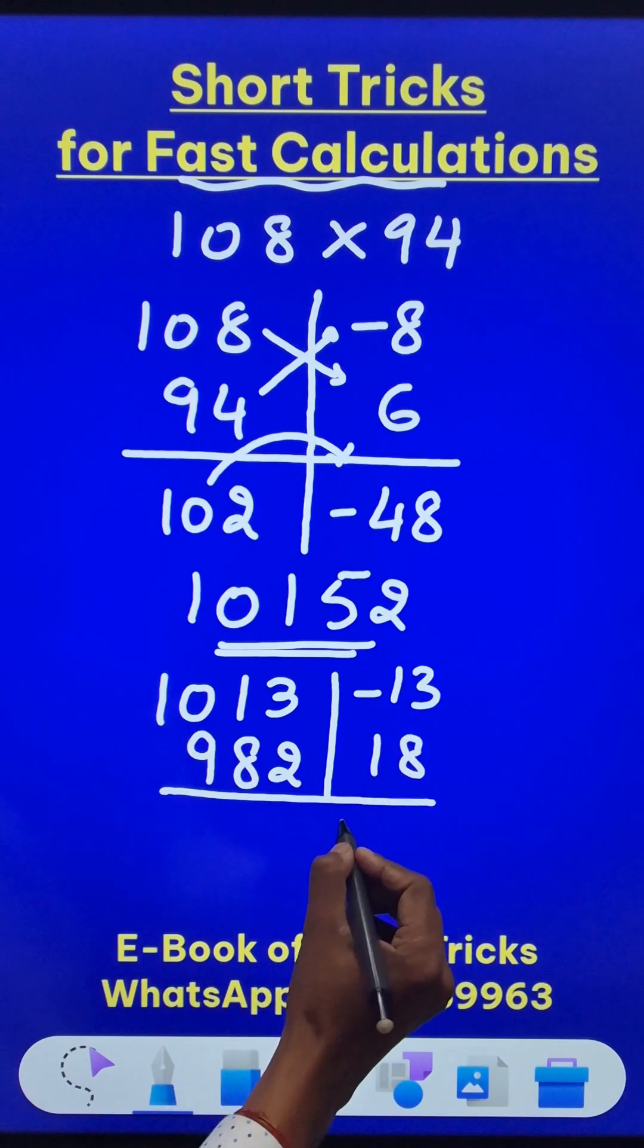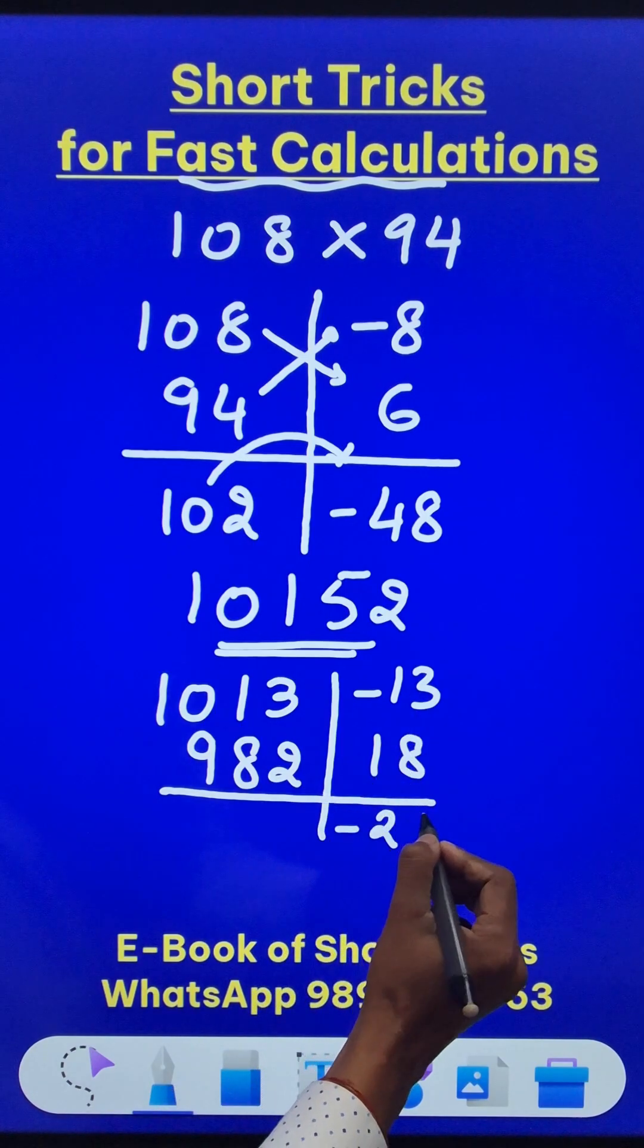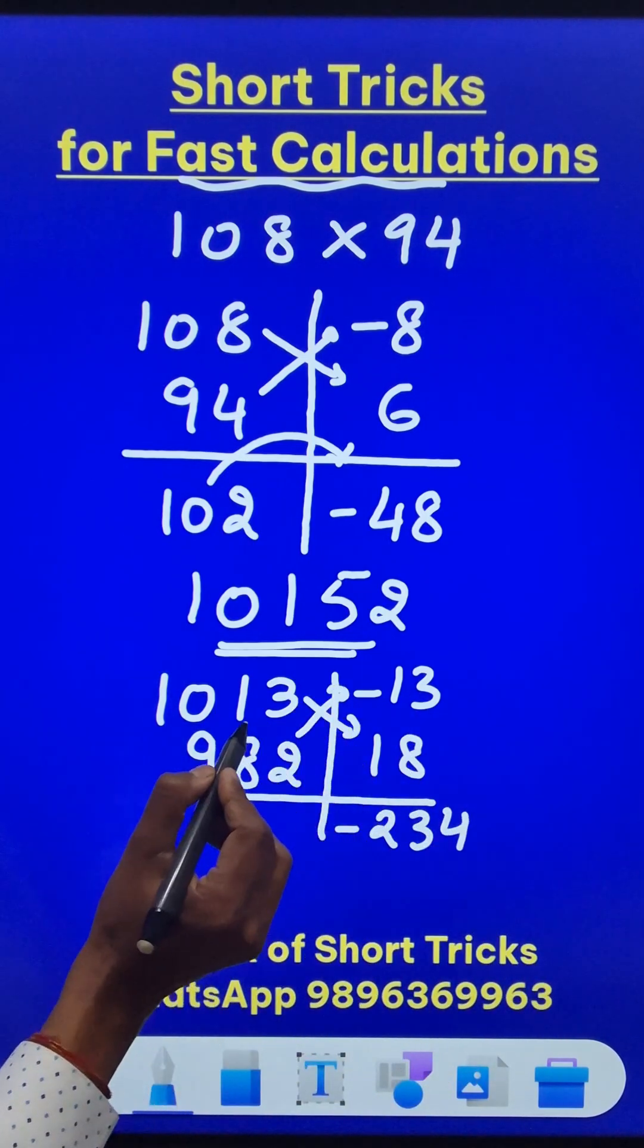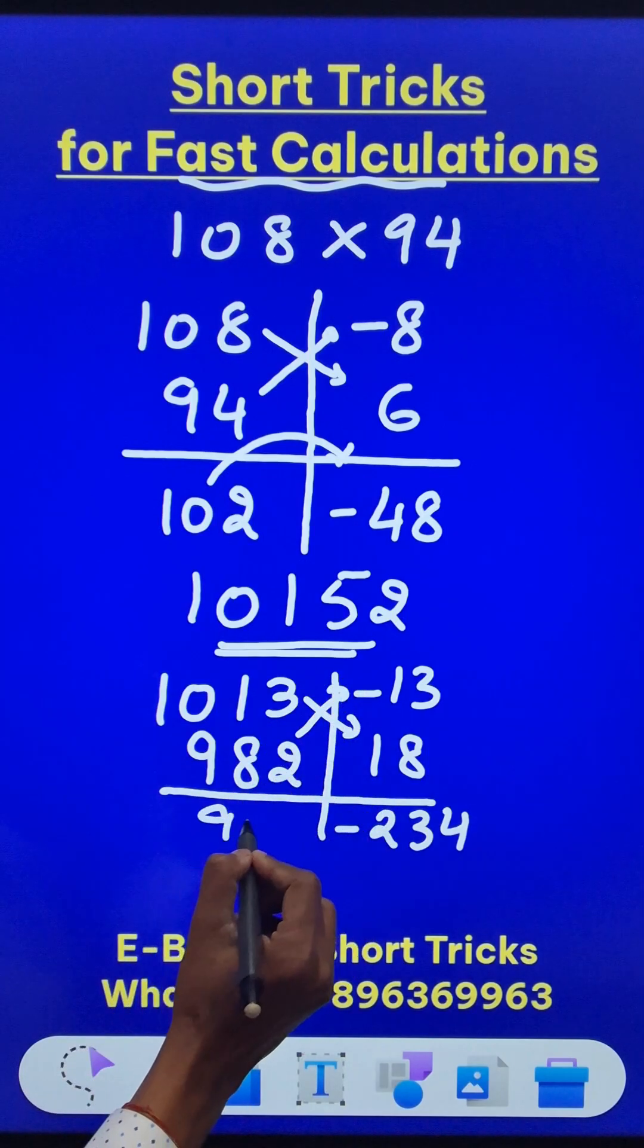When you multiply these two numbers, you get negative 234. And when you subtract like this or subtract like this, you get the same number 995.